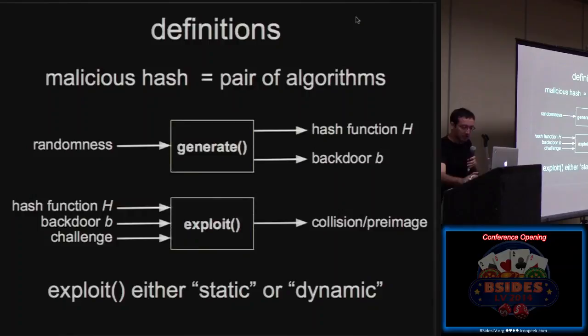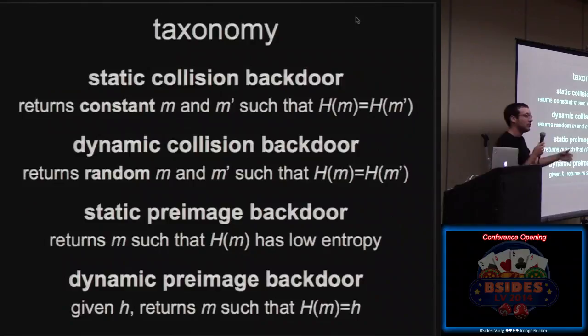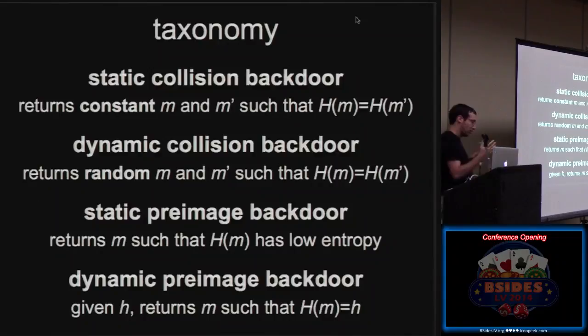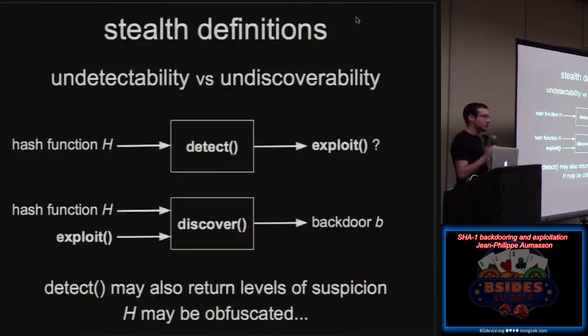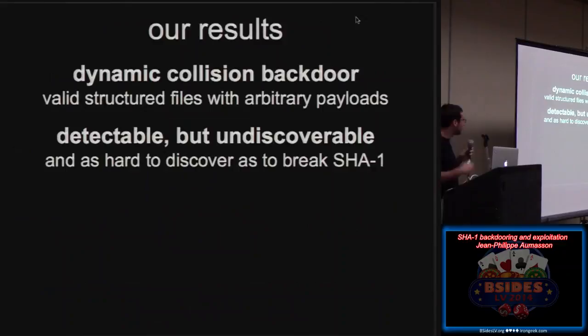All right. So we define two notions, static or dynamic. It's a bit boring, so you can look at this in the paper. But we have, for example, static collision backdoors. What I mentioned before, you just know one stupid collision. You have dynamic collision backdoors. It's more interesting, you can generate as many collisions as you want, or a lot of them. Now we have to define styles. So how strong is the backdoor in terms of detectability? So first of all, you want to hide the backdoor. So given the hash function, the good guys, they should not be able to spot the backdoor or to have a suspicion of a backdoor. And in case they know or they're told that there's a backdoor, then we don't want them to discover it.